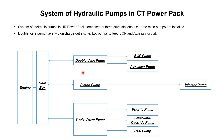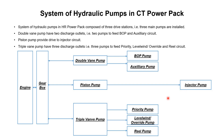The double vane pump has two discharge outlets — that is, two pumps to feed the BOP and auxiliary circuits. Although it has only one body, it has two discharge outlets, and each discharge acts as a single pump. The piston pump provides drive to the injector circuit. The triple vane pump has three discharge outlets to feed the priority, level wind, override, and reel circuits.